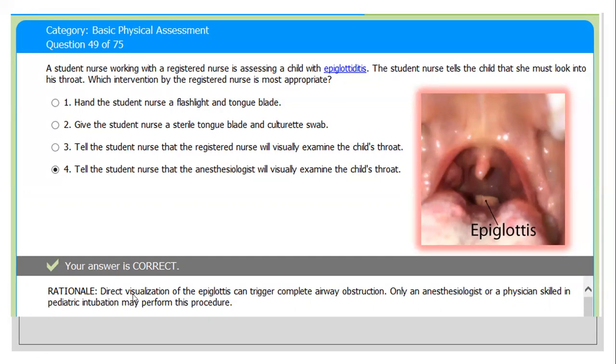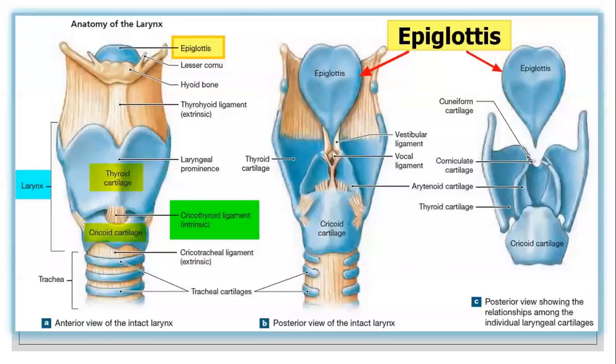The rationale says: direct visualization of the epiglottis can trigger complete airway obstruction. Only an anesthesiologist or a physician skilled in pediatric intubation may perform this procedure. This is the epiglottis. When this epiglottis is inflamed, we call it epiglottitis. It swells and blocks the flow of air into the lungs, and the result is difficulty swallowing.